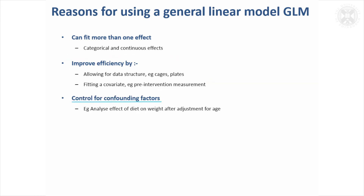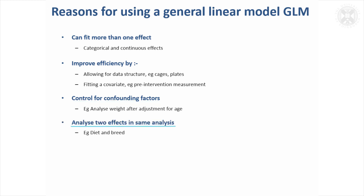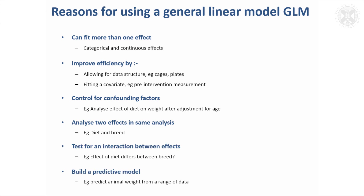You can control for confounding factors — for example, if looking at the effect of diet on weight, you might want to control for animal age. It's useful to analyse two effects in the same analysis and look at their interaction. And sometimes you might be interested in building a predictive model, predicting something from a range of measurements and observations. So it's a very useful class of models.